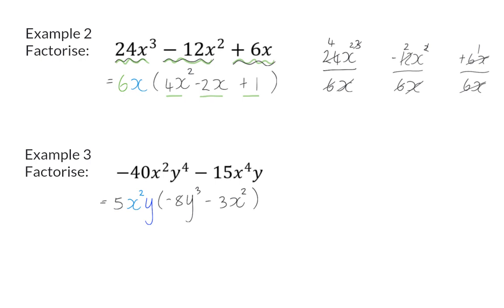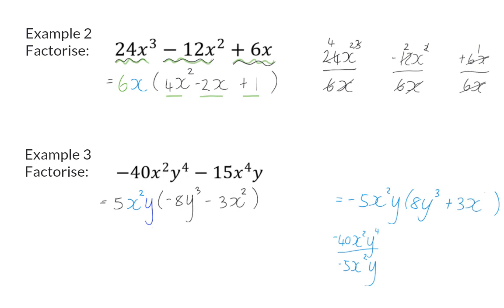Earlier, I mentioned that you can also choose to make your common factor minus 5x squared y. In this case, it doesn't matter which one you choose, but sometimes in bigger calculations it helps if you also take out a minus. If I now divide by minus in both terms, my second factor's signs will change, so I will have plus 8y to the power of 3 and plus 3x squared. Both of these answers will be acceptable.